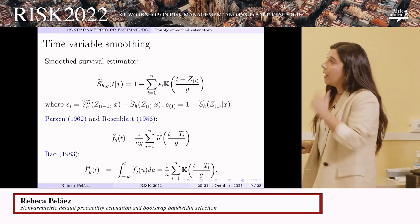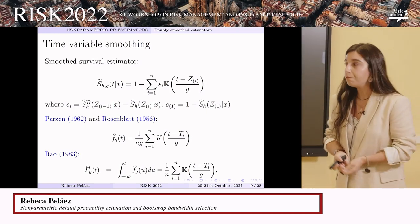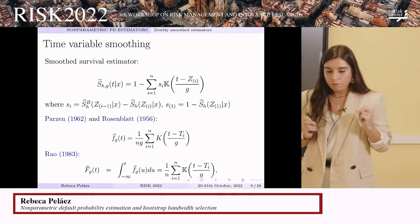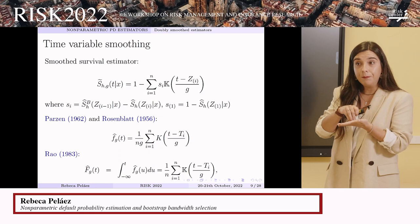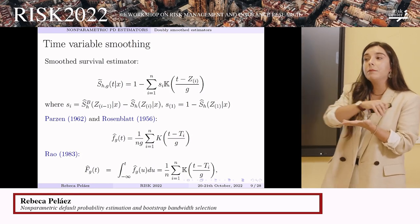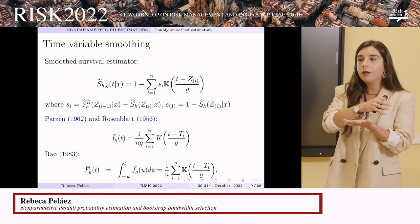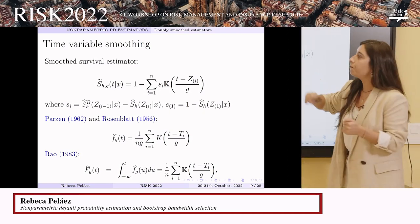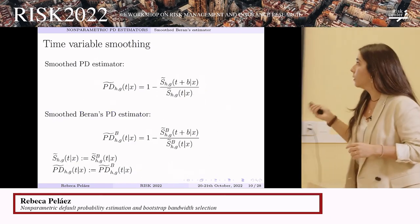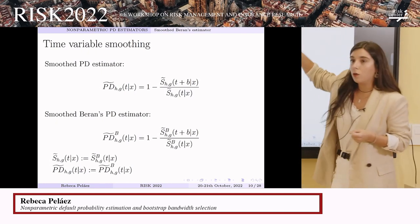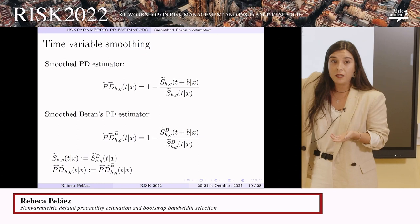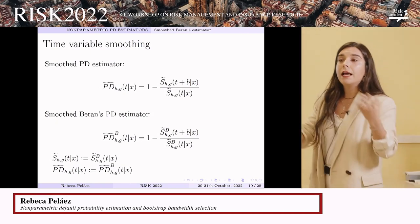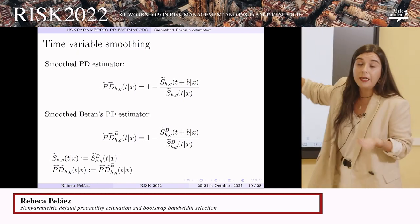Our proposal to solve this problem is a double smoothing of the conditional survival estimators — smoothing not only on the covariate but also in the time variable. We estimate the conditional survival function at a point T by means of a weighted mean of the jumps that the original non-smooth conditional survival estimator takes at points near T, where closeness is determined by the bandwidth g (the time-smoothing parameter). Using this smooth conditional survival estimator, we can obtain a probability of default estimator that is also smooth on the time variable. It is a general estimator — we can consider any conditional survival estimator, obtain its smooth version, and then derive the probability of default estimator.